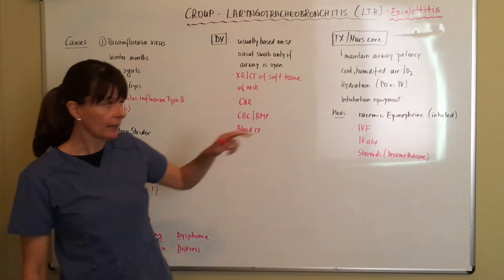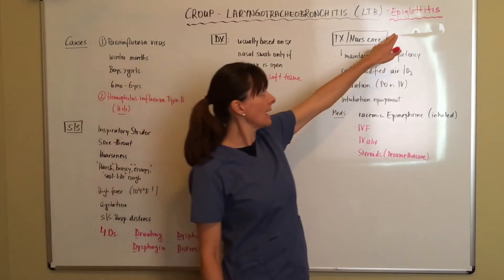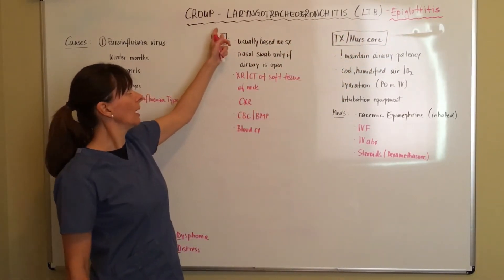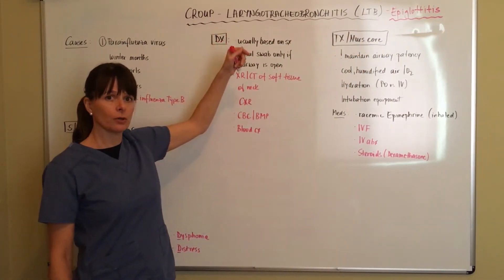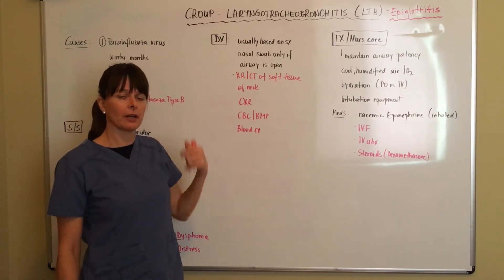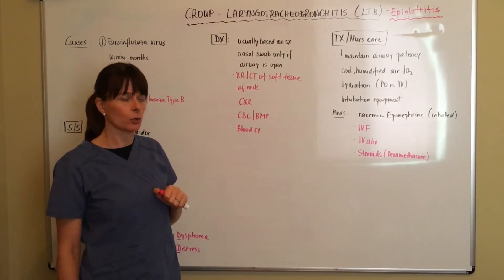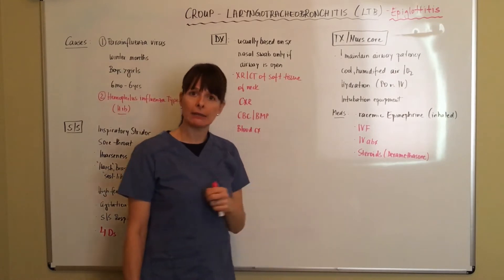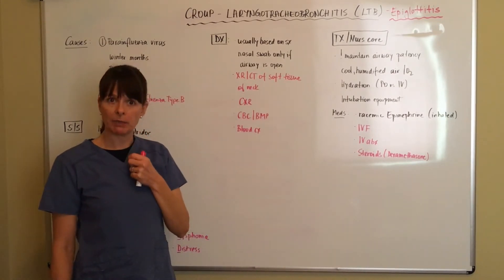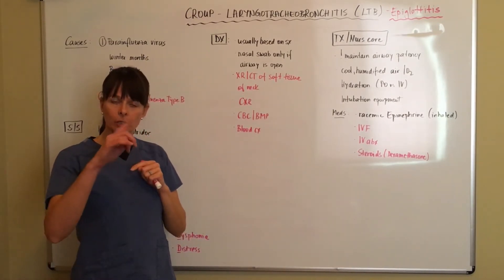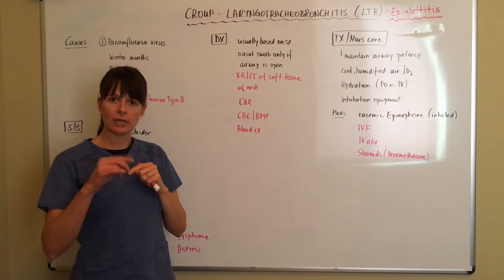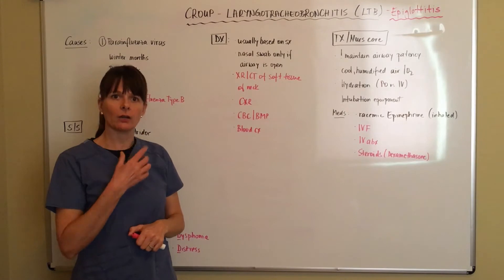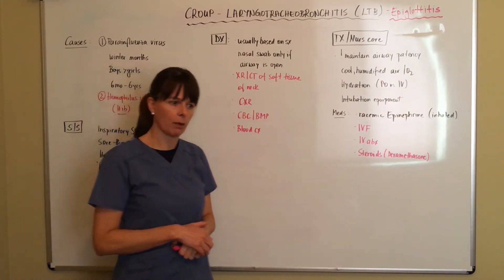There is a special case which is epiglottitis. It does fall into these croup-type disorders but it's a little bit different. Epiglottitis is basically inflammation of the epiglottis, which is the part that closes off the trachea when we swallow and eat. So when there's a lot of inflammation there, there can be a lot of problems.